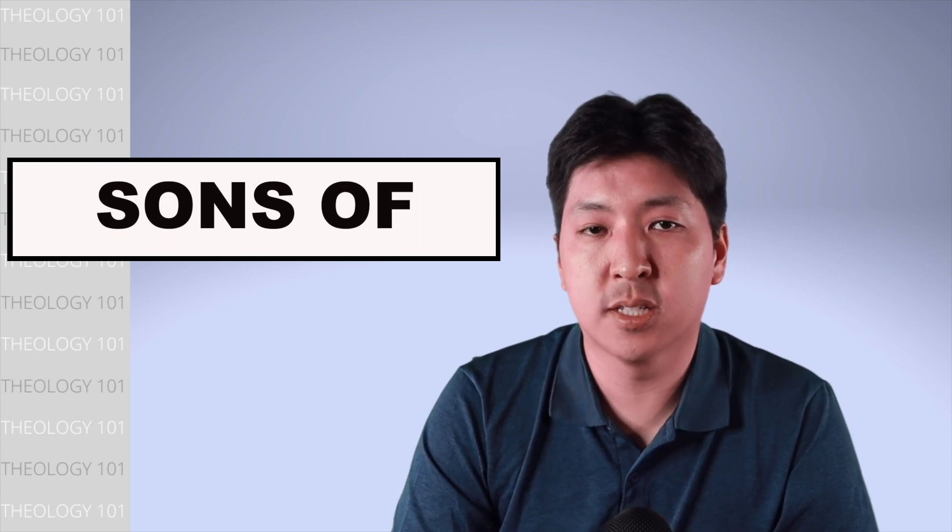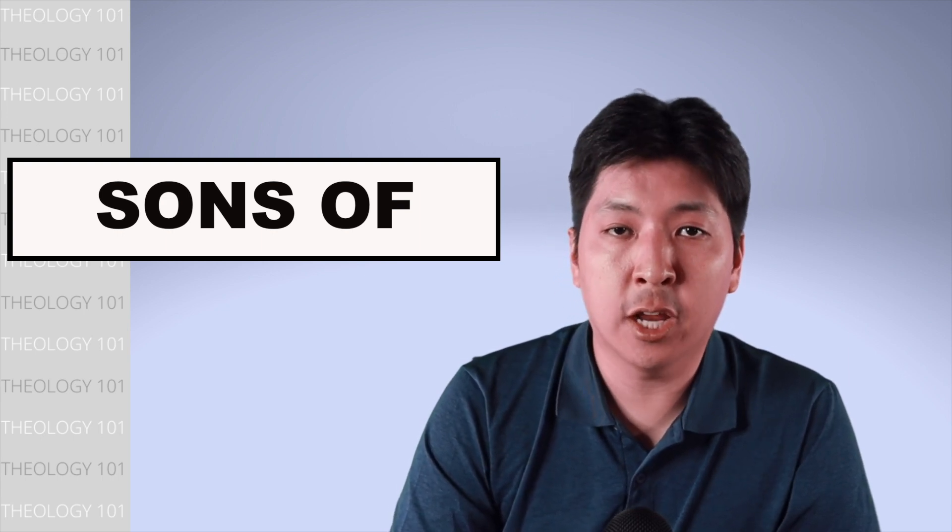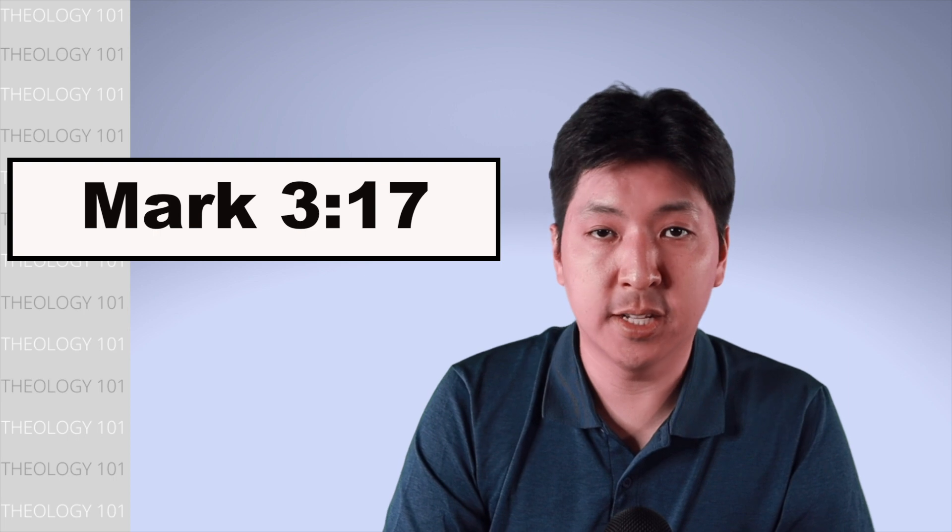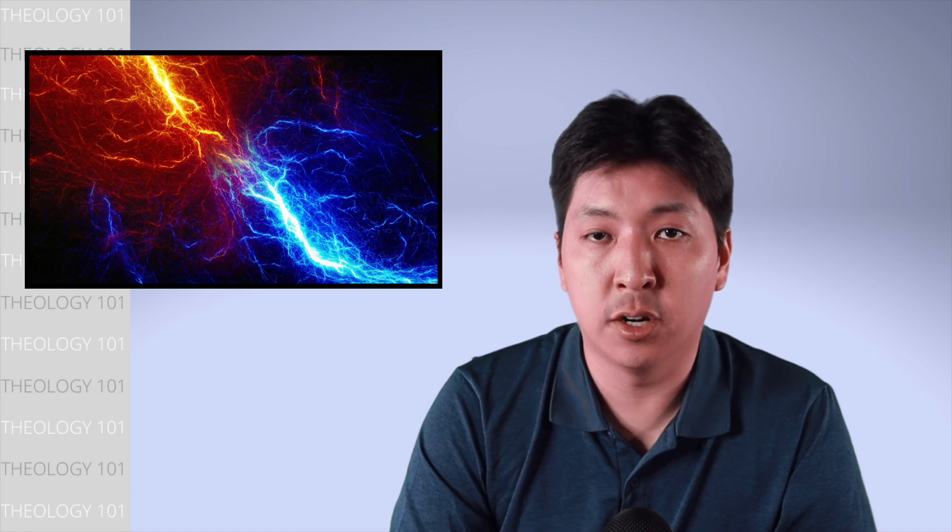During this time, people are called sons of something to say their character reflects that person. Remember the nickname Jesus gave John and James? Sons of thunder. He is not saying that James and John are descendants of thunder. Instead, Jesus is saying their characters reflect that of thunder. Violent, angry, and unpredictable.